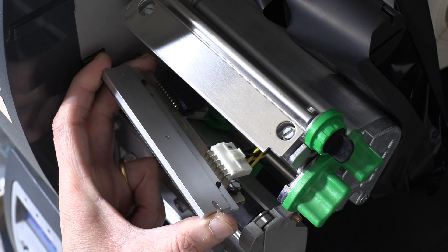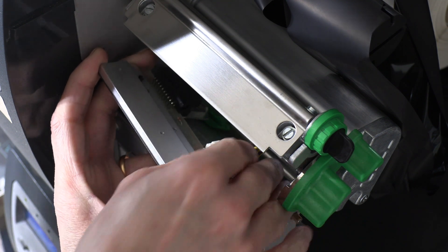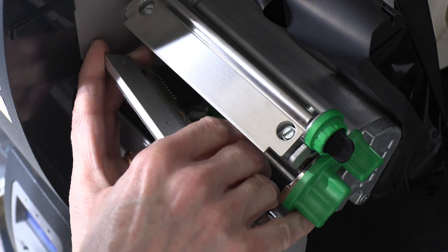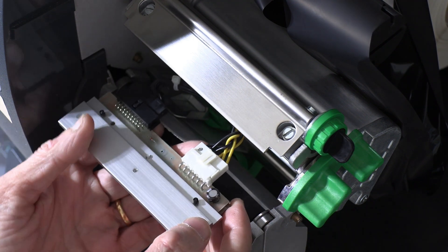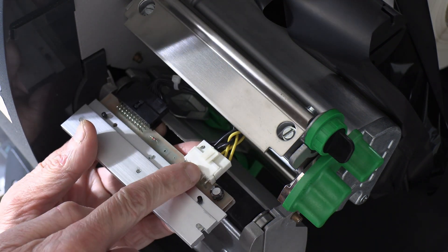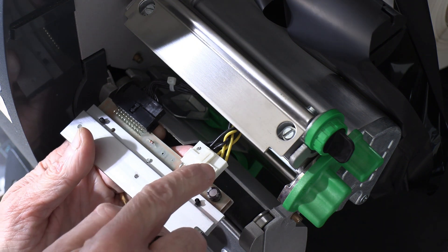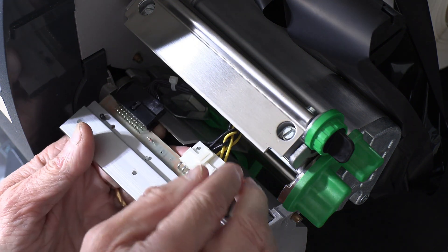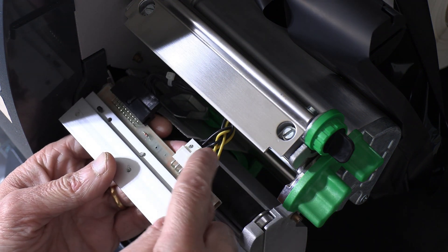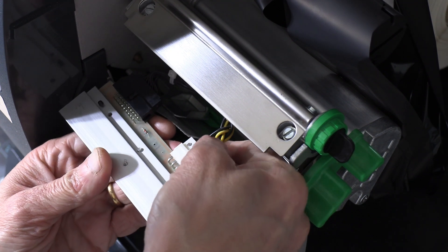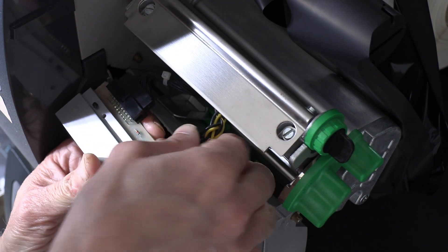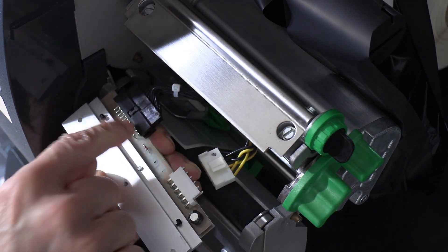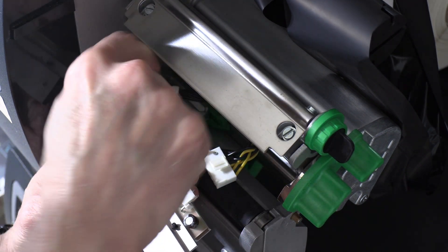So now once you remove this, if you notice there are two cables that need to be unplugged. You have to unplug this and that to release the printhead. This one you press and then slide like that, and this one you don't press, you just slide like that.